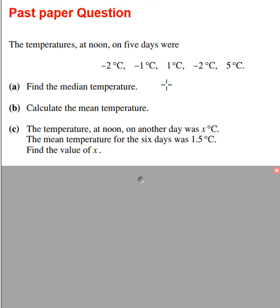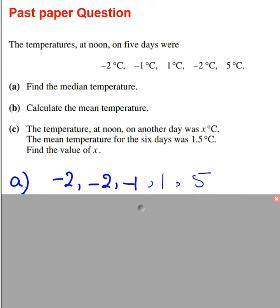Here is the temperature of five days given to you: -2°C, -1°C, 1°C, -2°C, 5°C. We have to calculate median and mean temperature. Part C I will see later. For median, you know, we have to arrange the data in ascending or descending order and then pick up the central data. For mean, we have to add up all the data and divide it by number of data. So here we have five data points. Let's do median first. I have arranged it in ascending order.